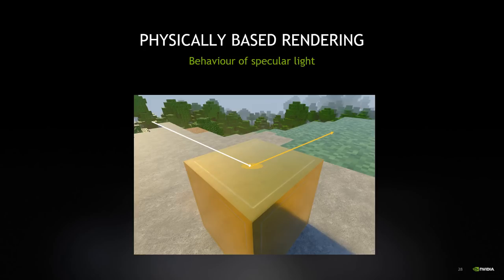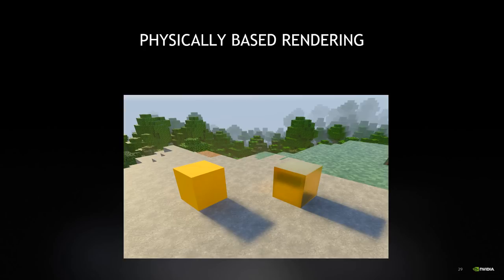Metals are very reflective by their nature — when you see them, you can see them reflecting their surrounding environment. And specular light will capture the base color of a metallic material, which is why, for example, you could see a gold-tinted reflection. So the biggest difference between non-metallic and metallic materials is that non-metallic materials reflect their base color in the diffuse light, whereas metals reflect their base color in the specular light, but non-metallics do not.